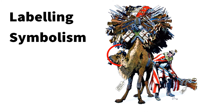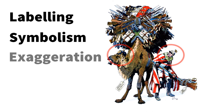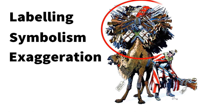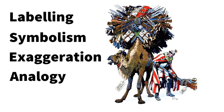Symbolism includes the German spiked helmet on the camel and a caricature of the German Kaiser loading weapons. An example of exaggeration is the oversized load of weapons on the camel's back. The analogy is, of course, between the burden of war taxation on the German population and the enormous load of weapons on the camel.